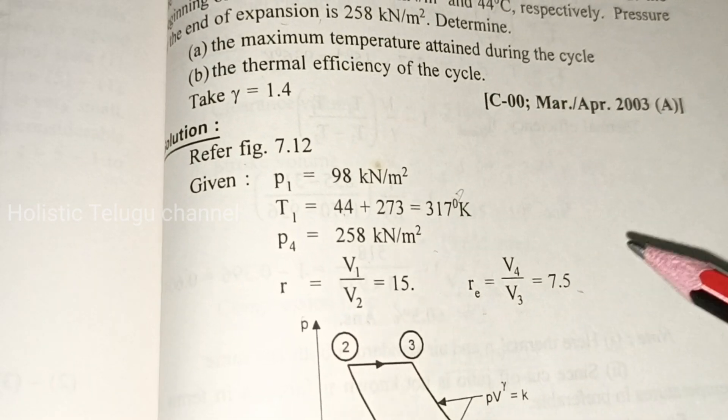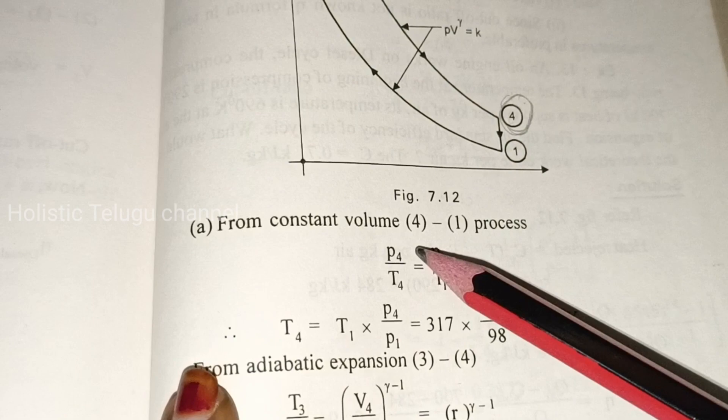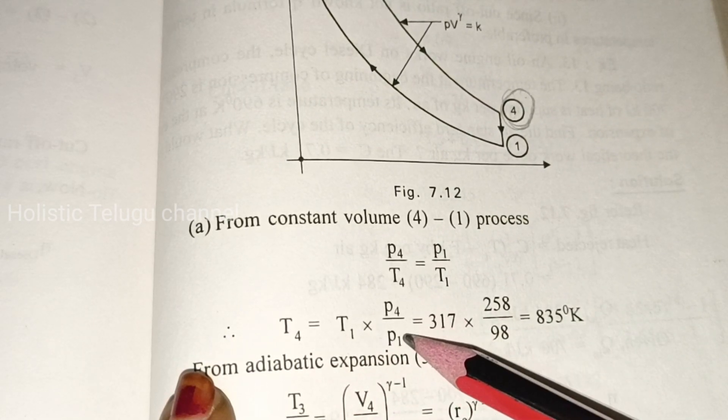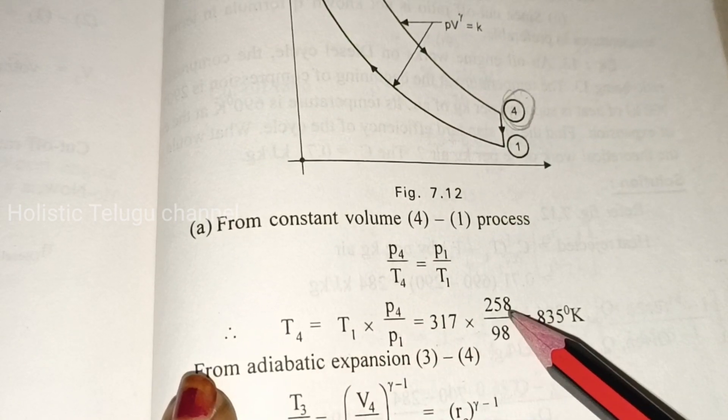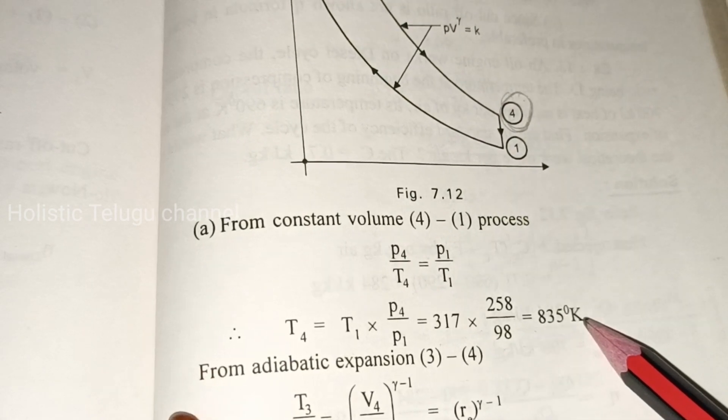Substituting the values: T4 = 317 × (258/98) = 835 K.